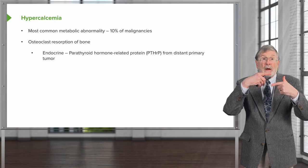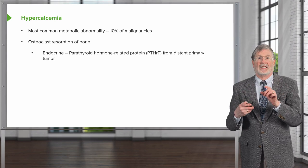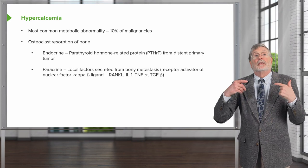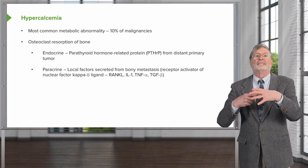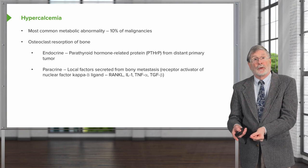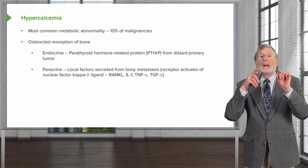There is an endocrine process driven by parathyroid hormone-related protein. This is not parathyroid hormone itself, but a related protein that has many of the same effects as parathyroid hormone, and it's elaborated by malignant cells. There's also a paracrine effect: if we have local inflammation or local tumor in the bone, we can release factors that will drive the activation of osteoblasts to cause osteoclasts to resorb bone.